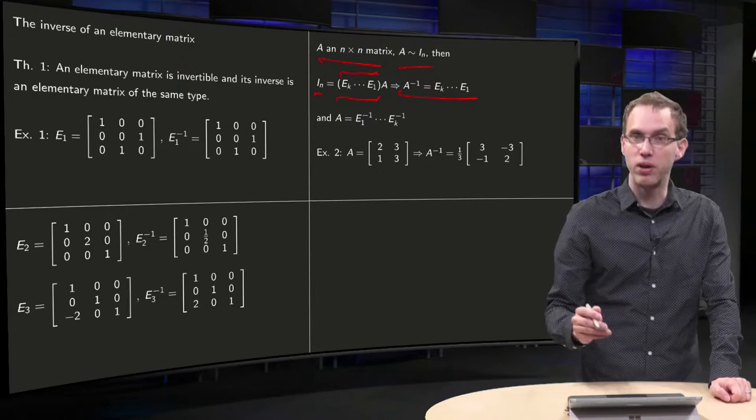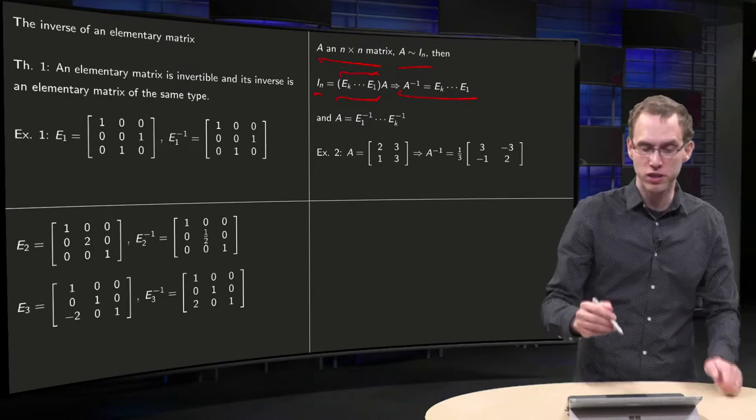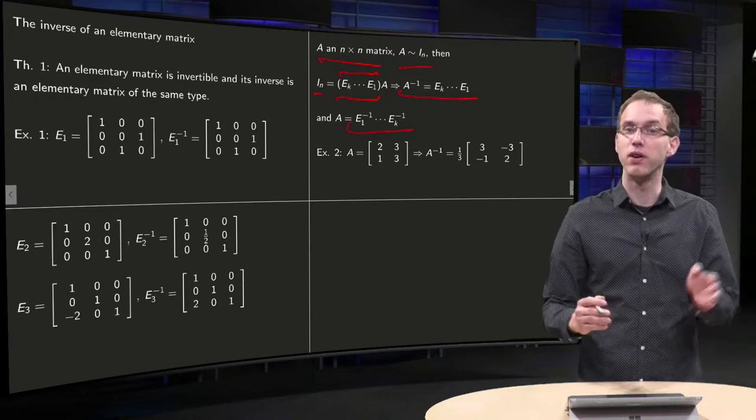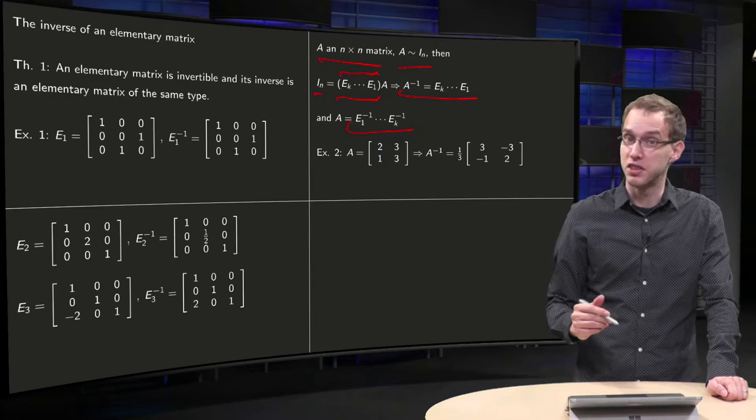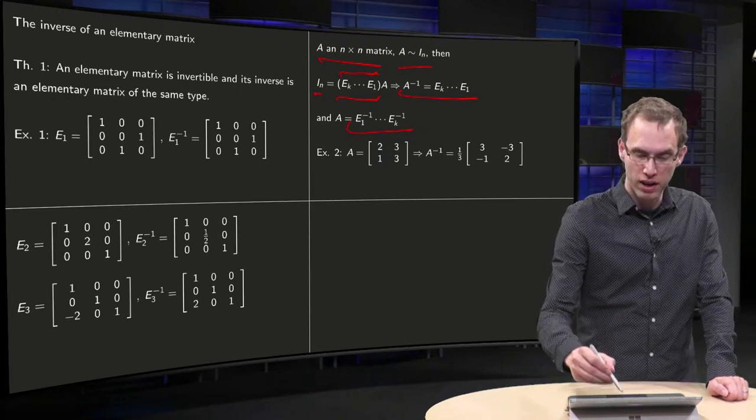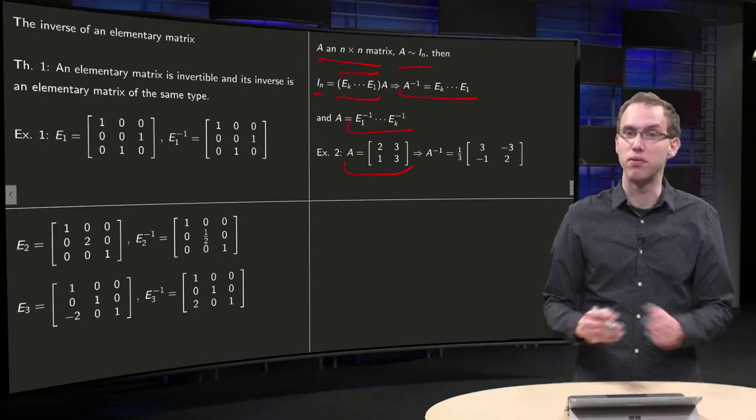And furthermore, you know if you invert this expression that your A should be E1 inverse, E2 inverse up to EK inverse. Let's try to check this. Here we have our matrix A, same from the previous example.